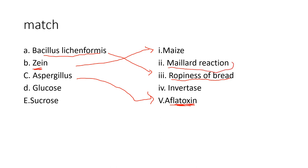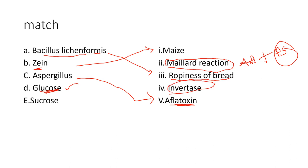The Maillard reaction is the browning reaction — for example, the browning of biscuits and cakes. It involves amino acids reacting with reducing sugars; in the Maillard reaction, glucose is the reducing sugar involved. Next, invertase is an enzyme that hydrolyses sucrose into reducing sugars — specifically fructose and glucose.